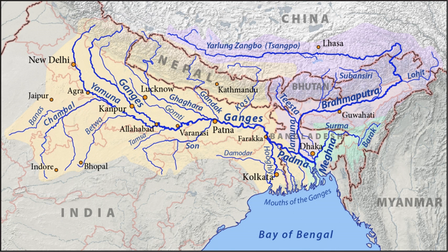To the north, the Himalaya or lower parallel ranges beyond form the Ganges-Brahmaputra Divide. On the west the Ganges Basin borders the Indus Basin and then the Aravali Ridge. Southern limits are the Vindhyas and Chota-Nagpur Plateau. On the east the Ganges merges with the Brahmaputra through a complex system of common distributaries into the Bay of Bengal.